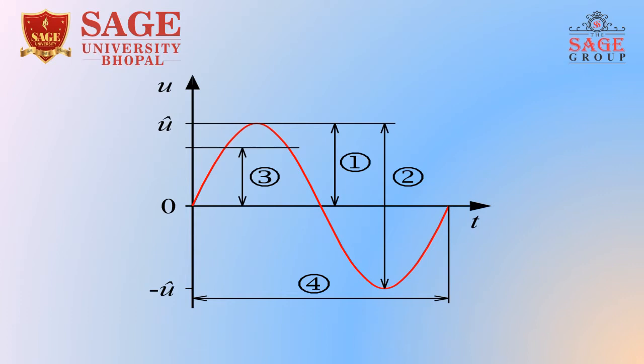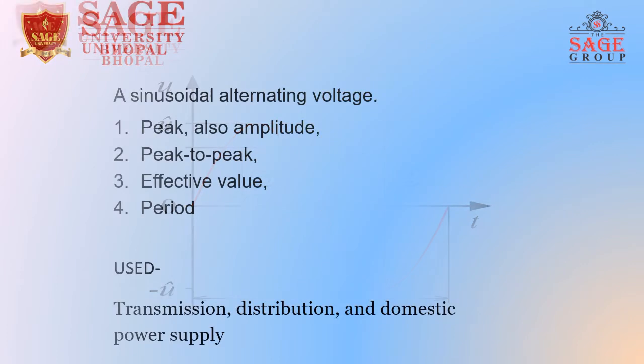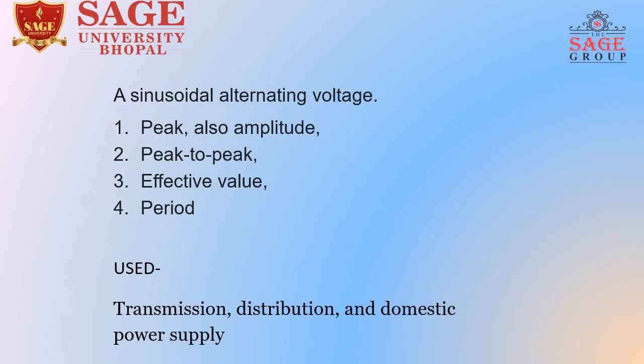This is an example of a sinusoidal waveform. The diagram labels four features: 1 is denoted by the amplitude, also called the peak and amplitude value; 2 is denoted by the peak-to-peak value; 3 is denoted by the effective value; and 4 is denoted by one complete cycle, which is called a period. For the sinusoidal alternating voltage: 1 is the peak or amplitude, 2 is peak to peak, and 3 is the effective value for the period.